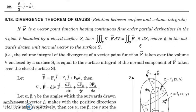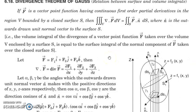So the volume is bounded by a closed surface S. The double integral F·N dS denotes the flux across that surface, and that is equal to the volume integral, the triple integral of ∇·F dV. This is the relation connecting surface integral and volume integral. We will now see a few examples.